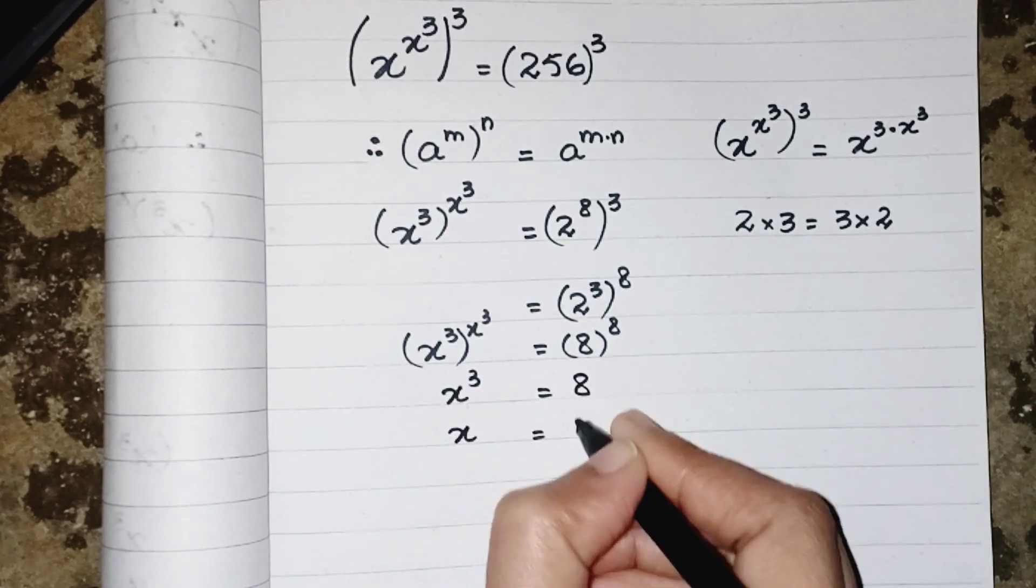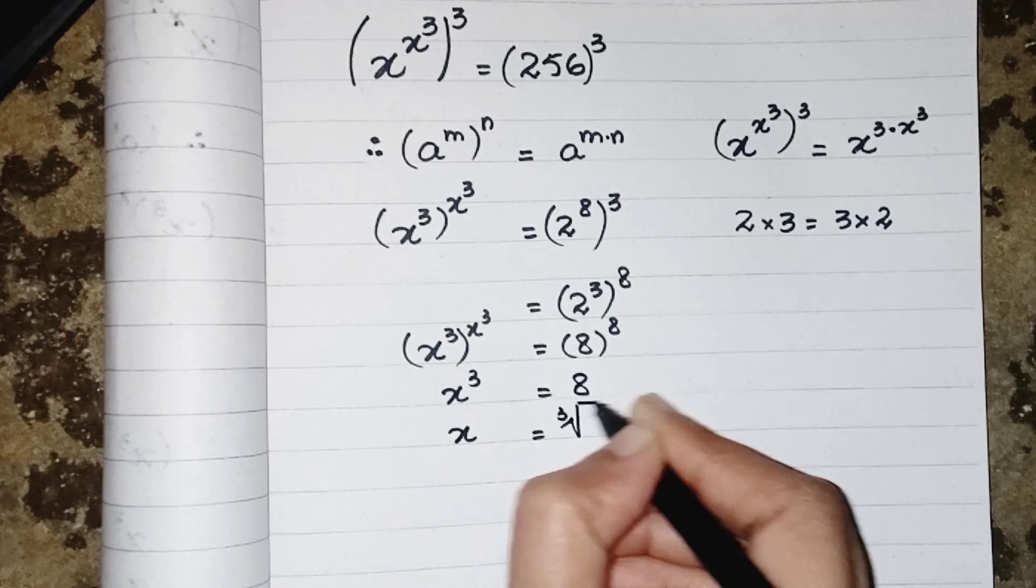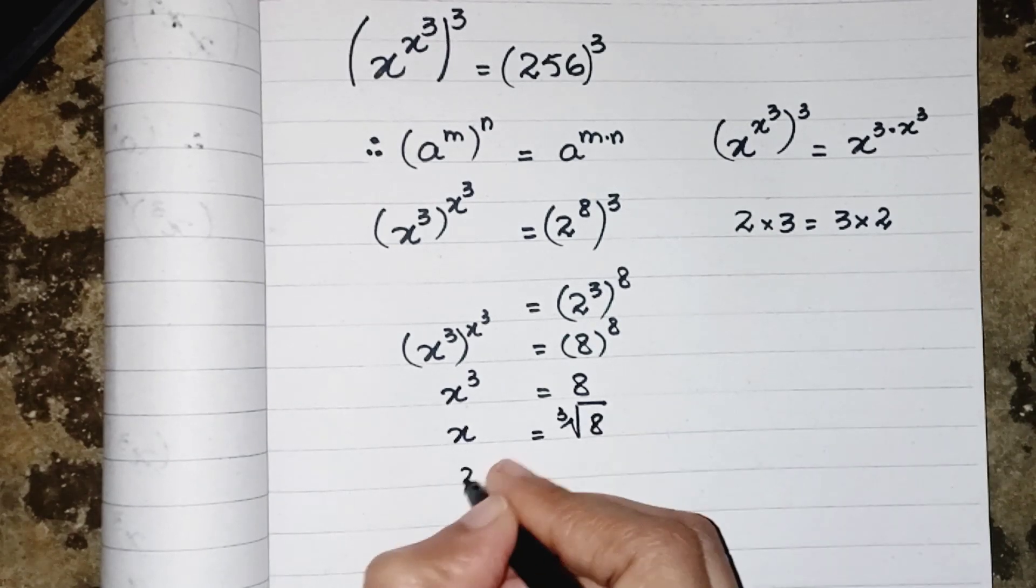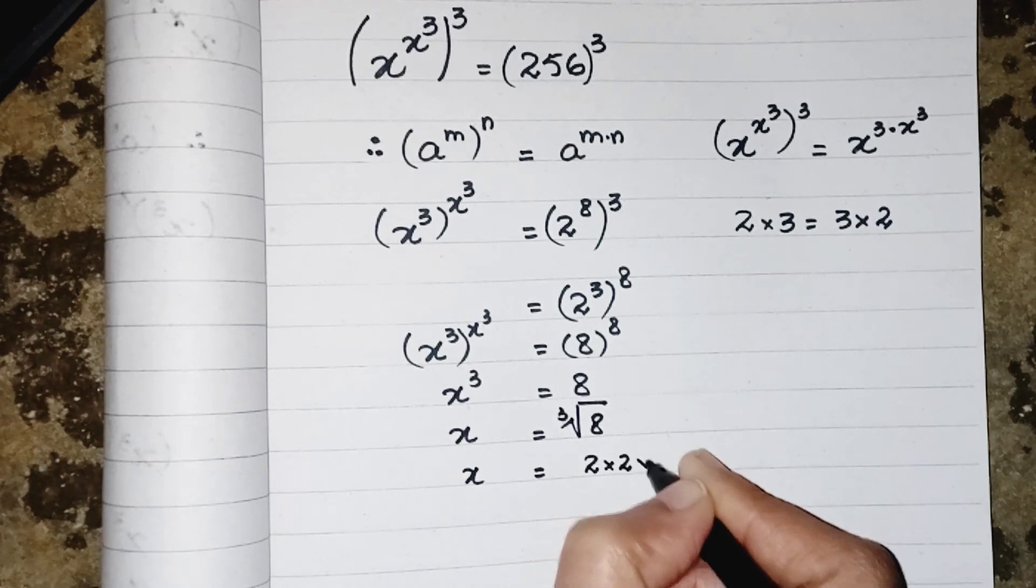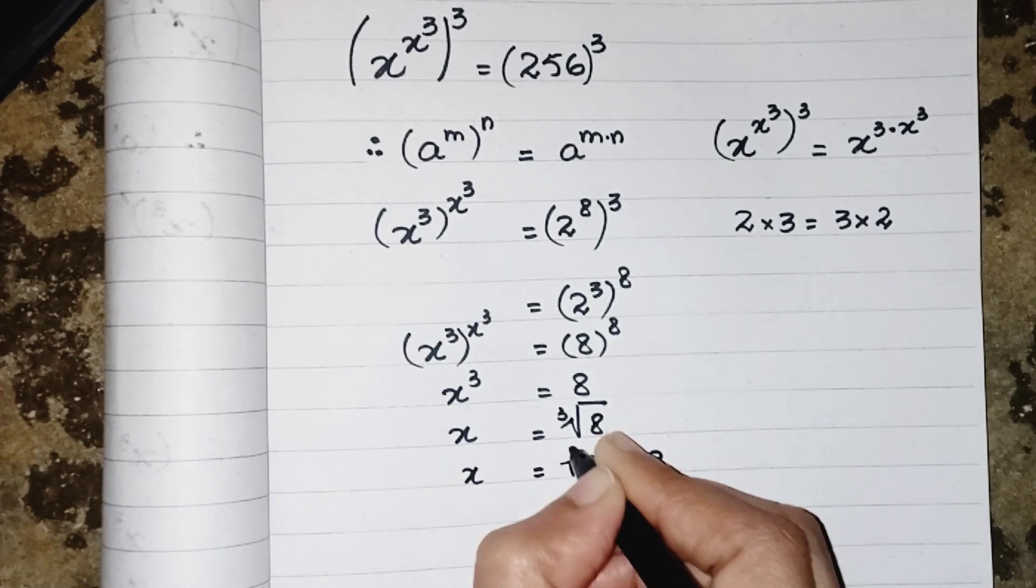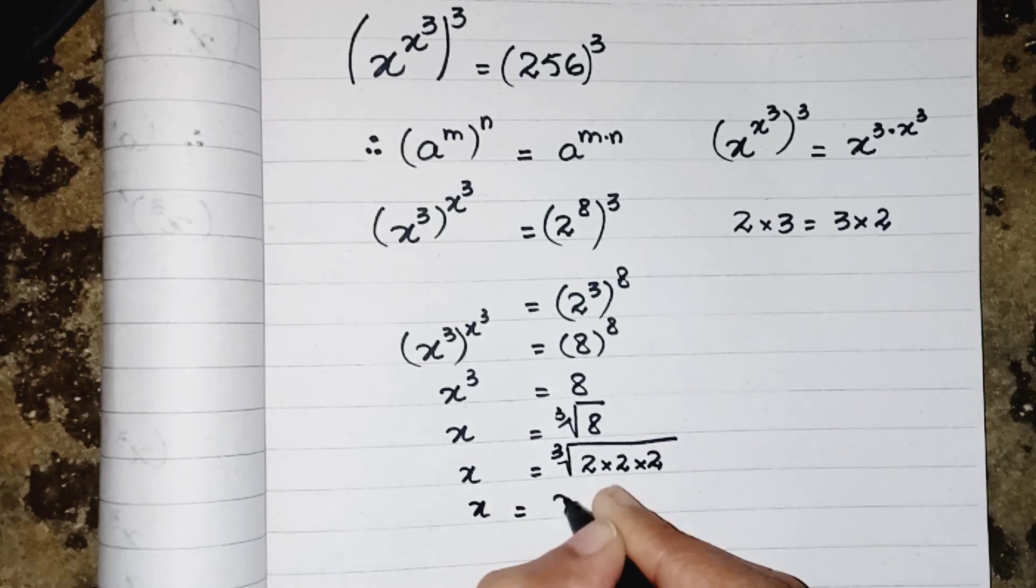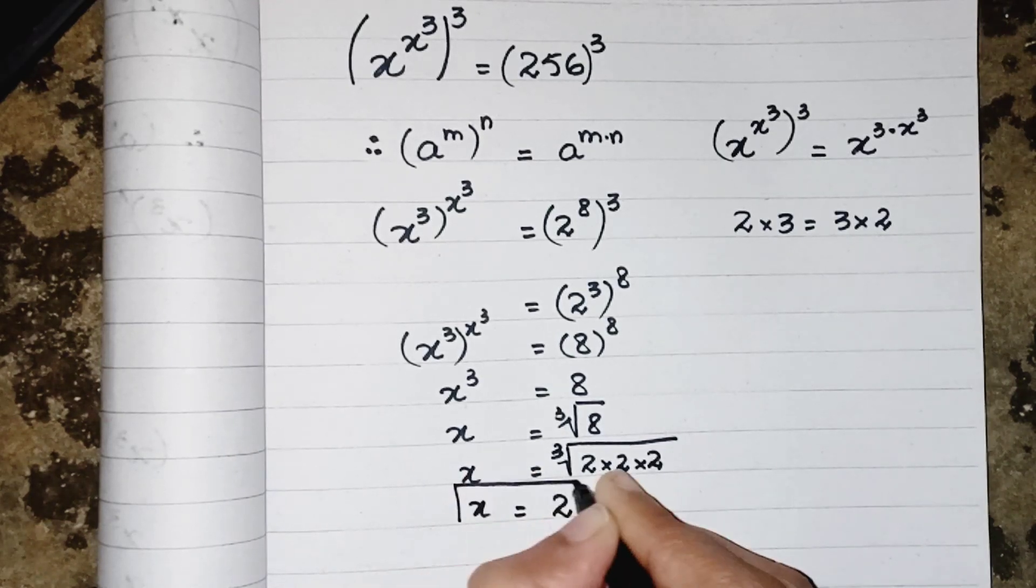To find the value of x, we have to remove the cube, so we can find the cube root of 8. X equals 2 times 2 times 2, so the value of x is 2.